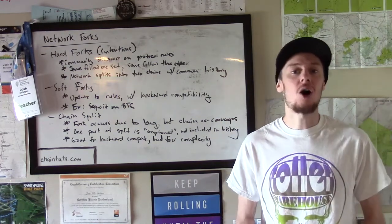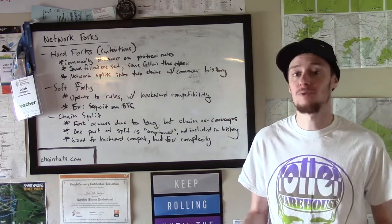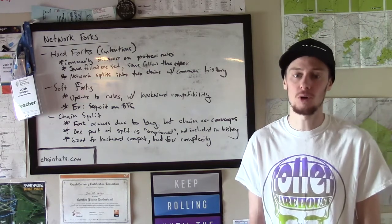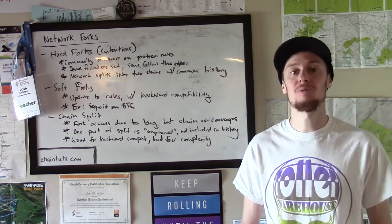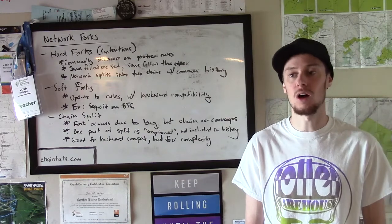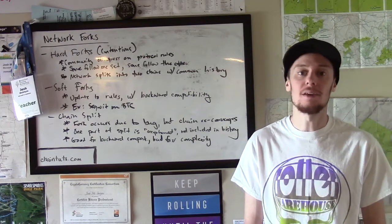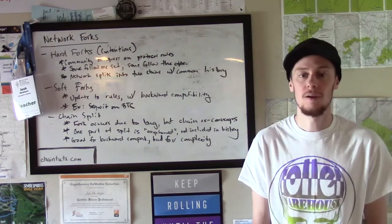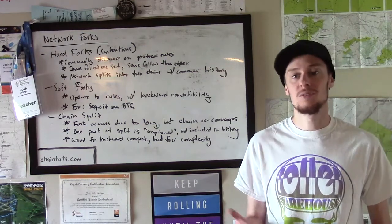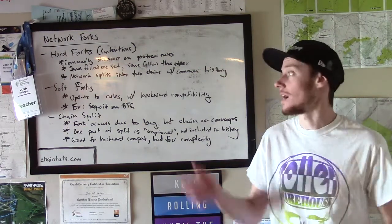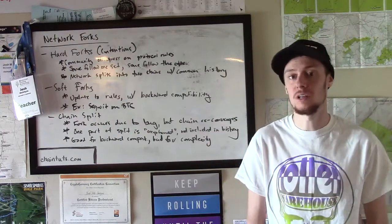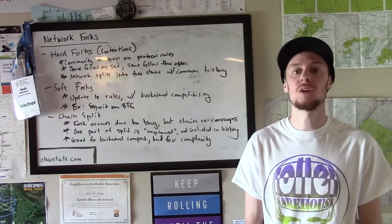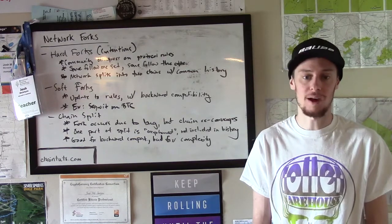As you can see, hard forks and blockchain forks in general don't just happen to create new cryptocurrencies. Sometimes they happen fairly regularly within the course of simply operating these globally distributed blockchains, with things such as chain splits. It can be normal, sometimes it comes as part of a contentious community disagreement, and sometimes even soft forks happen in order to add new features with backward compatibility.